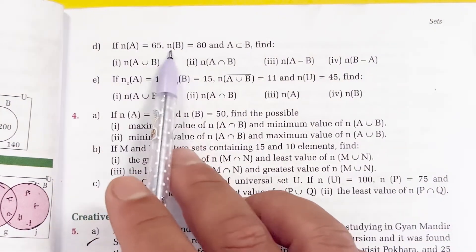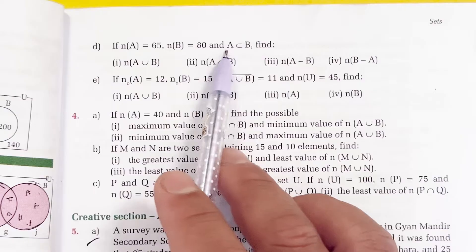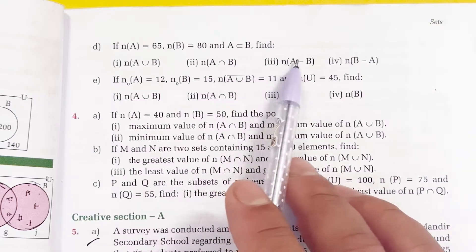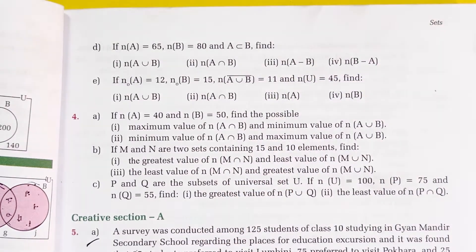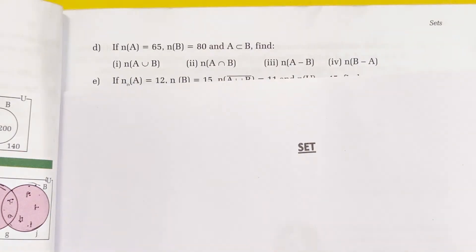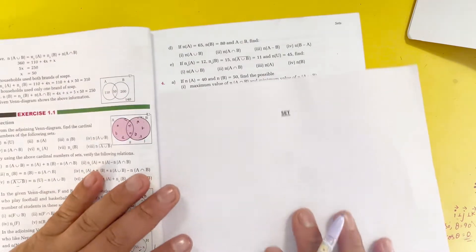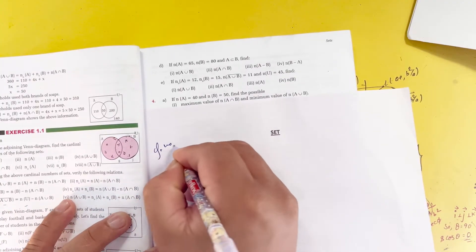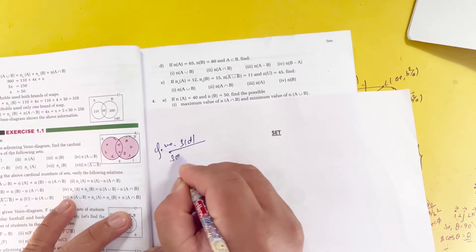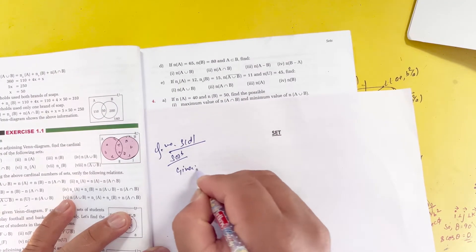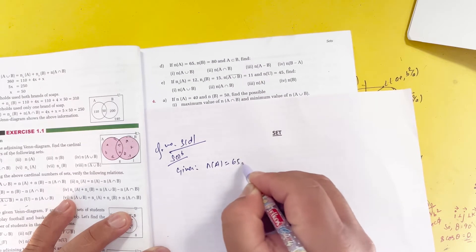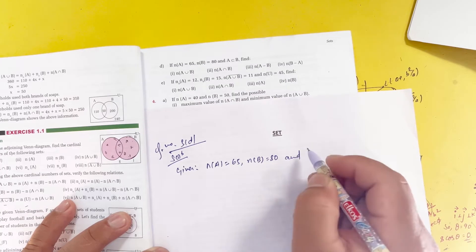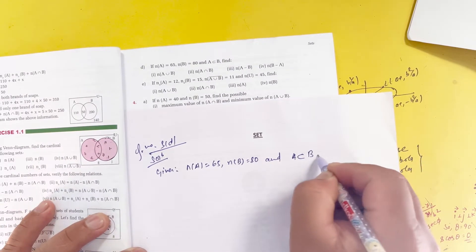If n(A) equals 65 and n(B) equals 80 and A is a subset of B, find n(A union B), n(A intersection B), n(A minus B), and n(B minus A). Number three solution: given n(A) equals 65 and n(B) equals 80 and A is a subset of B.